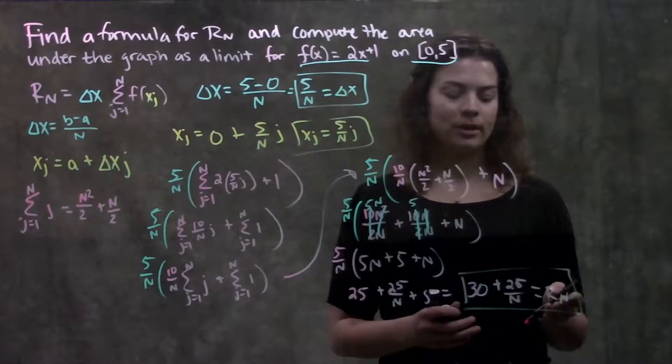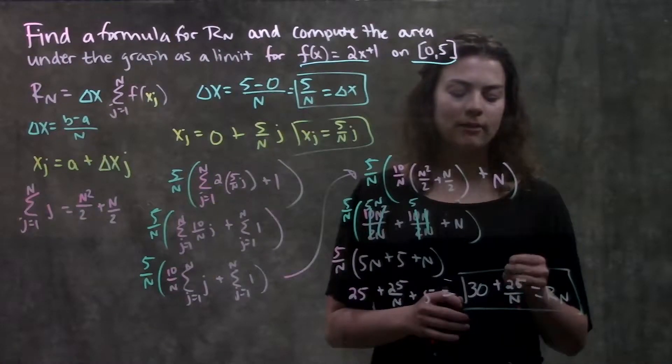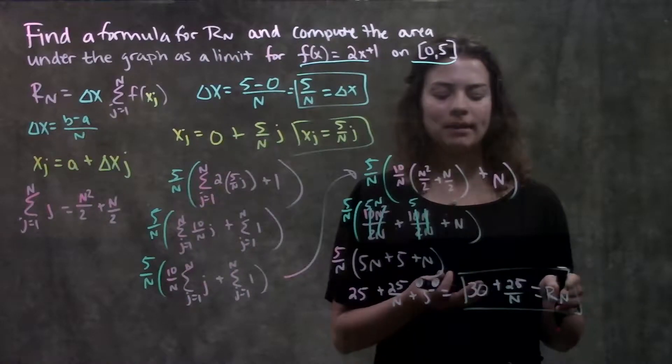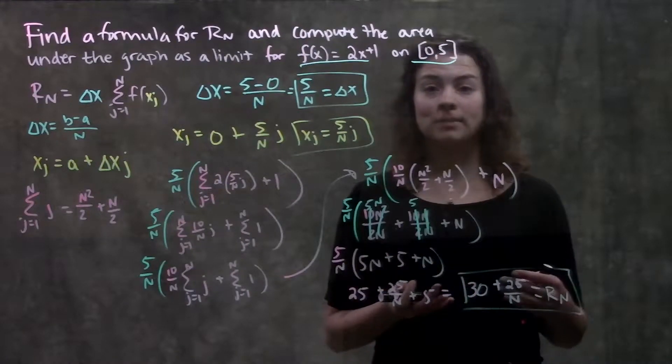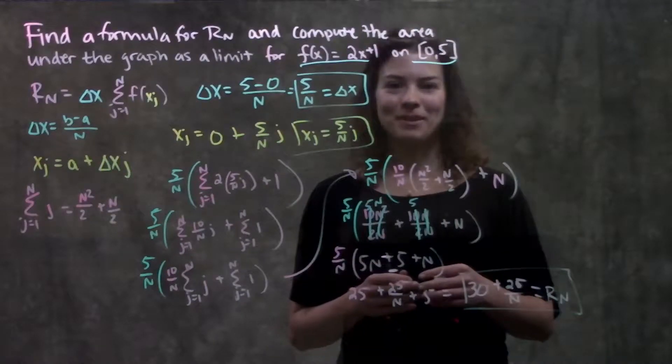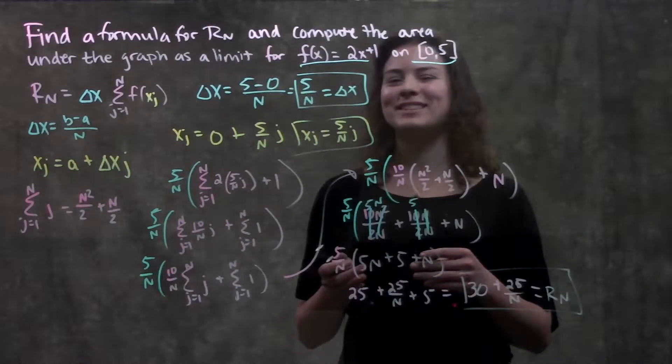So, what I have here is, if I were interested in 4 rectangles, I could plug in 4 for n, and get my approximate area. I can plug in any number I want for n, and be able to approximate the area with that many rectangles. Alright, so, first part of the question is done, but we still have a second part.